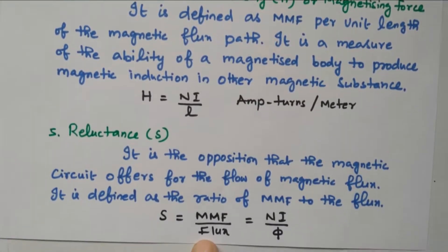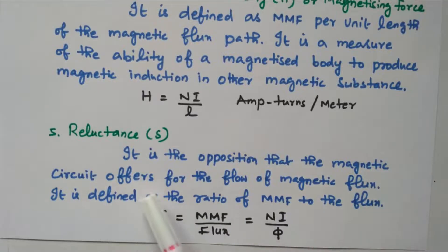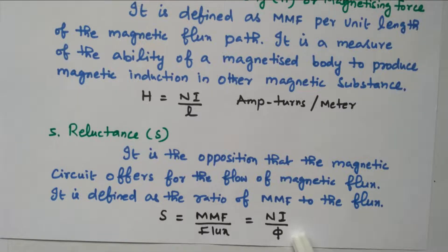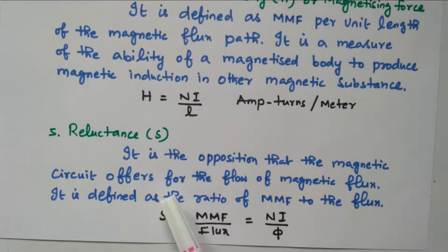Next is reluctance. It is the opposition that the magnetic circuit offers to the flow of magnetic flux — very similar to resistance in an electric circuit, where resistance opposes the flow of current. Reluctance opposes the flow of flux. It is given by the ratio of MMF to flux: S = NI/φ.